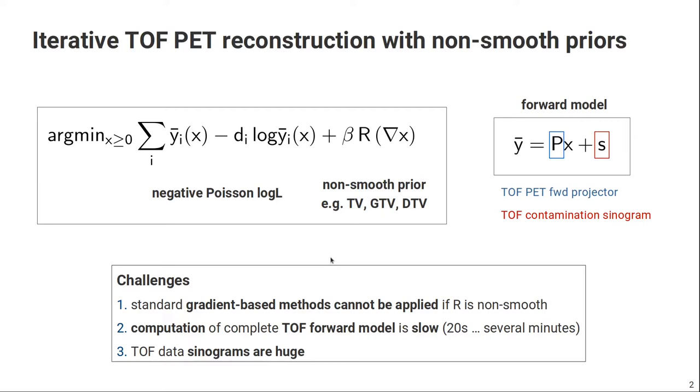The second challenge is that the evaluation or the computation of the time-of-flight forward model can be quite slow. Depending on your scanner and the complexity of your forward model, it can be between 20 seconds and several minutes. And the third challenge is that the time-of-flight data itself is quite big. A standard time-of-flight sinogram of one of the state-of-the-art PET-CT scanners is around 20 gigabytes in memory right now.